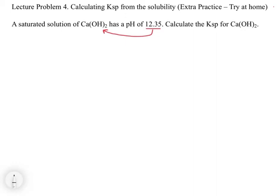For this problem we're going to look to see how we can use pH to calculate Ksp. We're going to do what we normally do, which is we're going to write our reaction. So we're going to say that calcium hydroxide solid is in equilibrium with calcium 2 plus aqueous plus 2 OH minus aqueous.